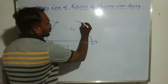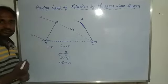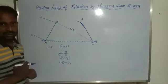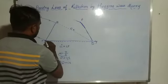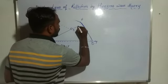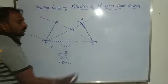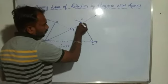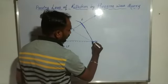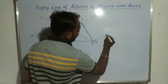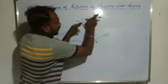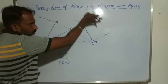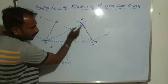Here we consider this point as F. AB is the incident wavefront and FD we consider as the reflecting wavefront. If a perpendicular line is drawn to this reflecting wavefront, we get the reflected rays. This is the incident ray and this is the reflected ray — these two are parallel to each other, meaning both are perpendicular to the reflecting wavefront.